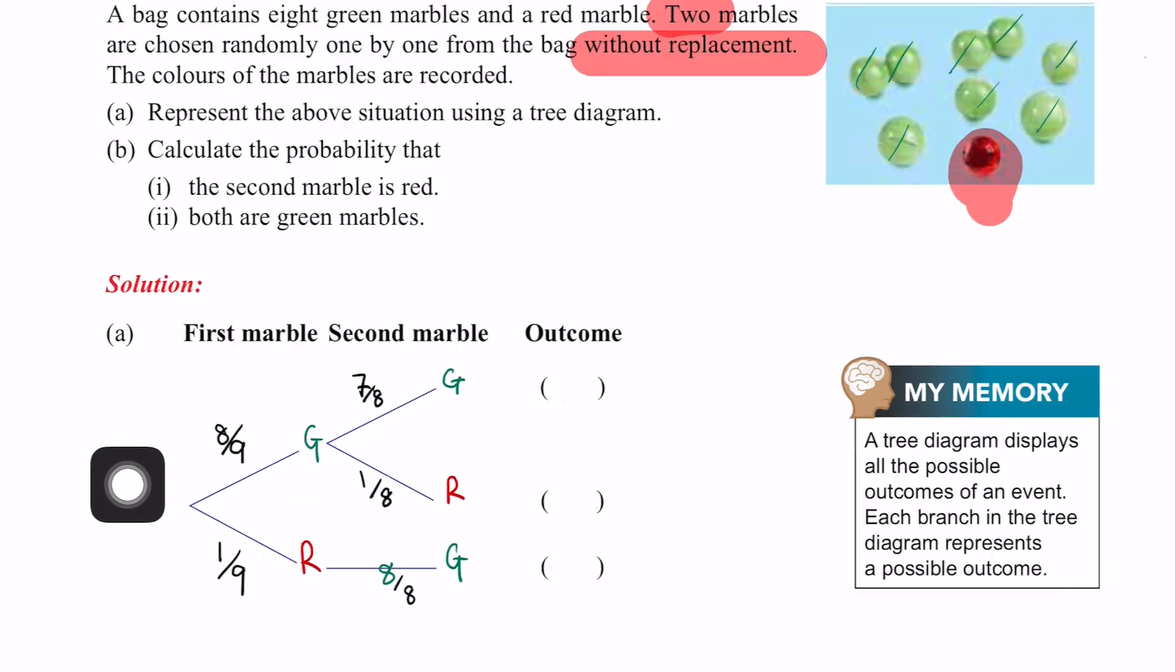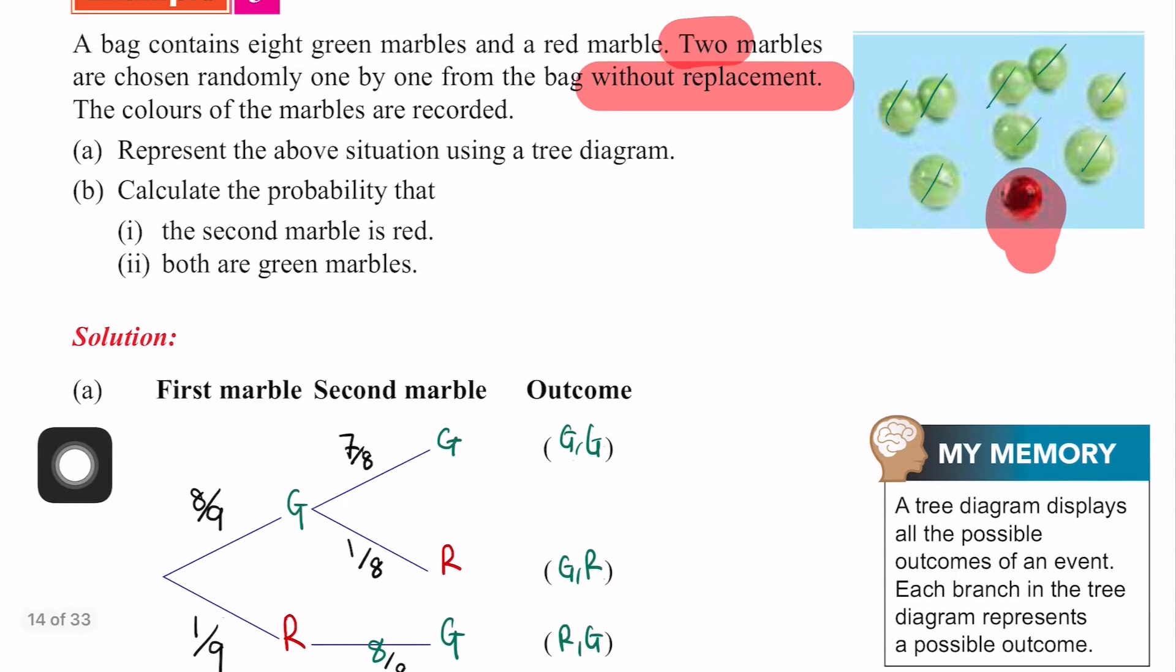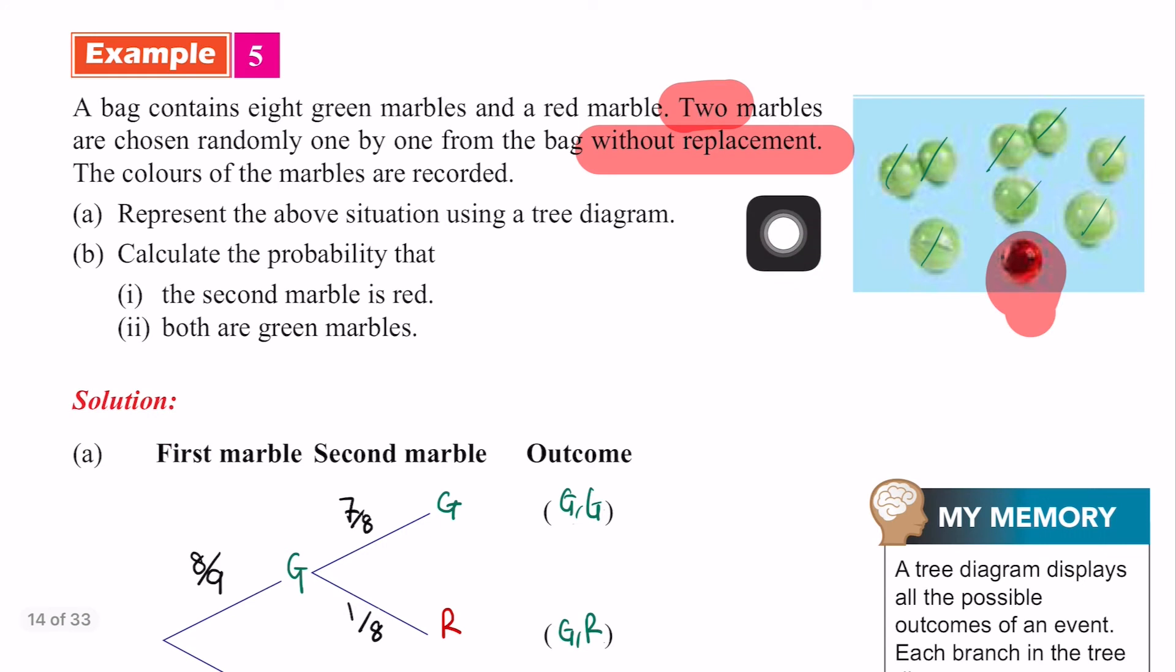So the possible outcomes: maybe I'll get green, green. Maybe green, red. Maybe also red, green. Is there red, red? Cannot. Because we only have one red and this is without replacement. Remember that.